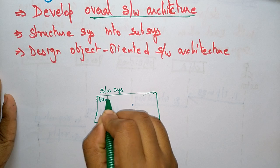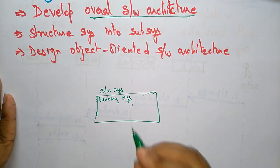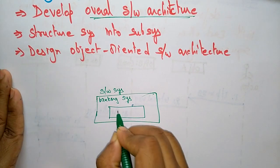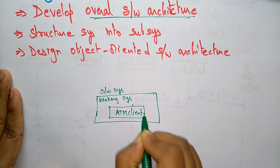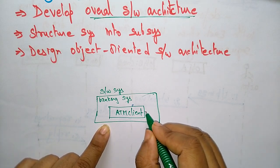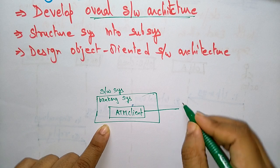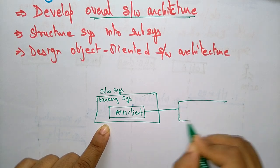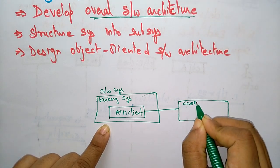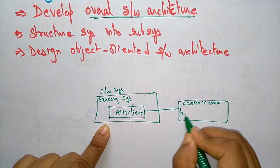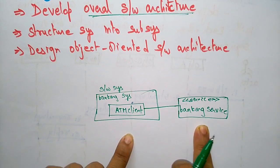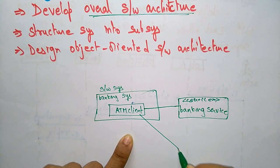Let us take a banking system as our example. In the banking system, you have ATM clients. This ATM client is communicating with a banking service. The ATM client needs to communicate with the banking service.